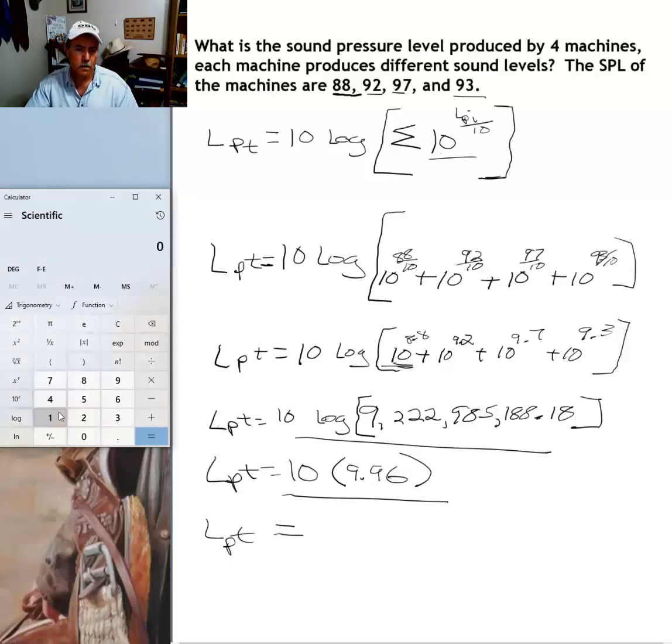And we are almost there. Here, the last iteration is just a multiplication: ten times nine point nine six equals ninety nine point six.